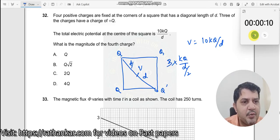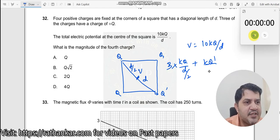See this is d by 2 here. At this point, kq by d by 2 plus kq by d by 2 plus kq by d by 2 plus the potential over here. What is this now? kq dash divided by d by 2 should now be equal to...